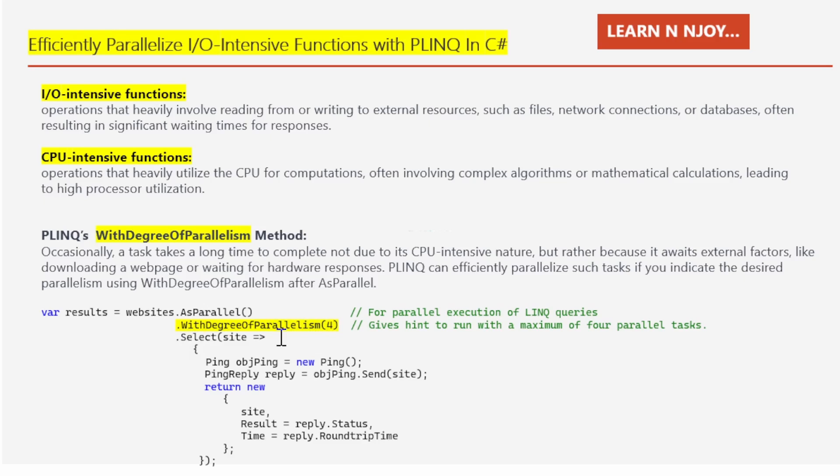Then I have added WithDegreeOfParallelism(4). Here I'm just giving the hint to run a maximum of four parallel tasks. I mentioned four, so it means just giving the hint that the query should be executed with the help of a maximum of four parallel tasks only.